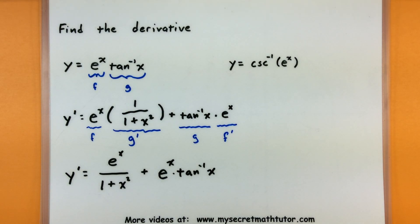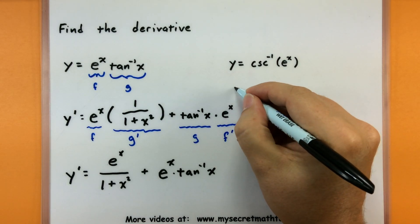All right, on to the next one, this is y equals inverse cosecant of e to the x. Now I wanted to throw this one in here, because if you look at the rules for the derivative of inverse cosecant, there's actually two little x pieces in there, so watch for that to show up when we take its derivative.